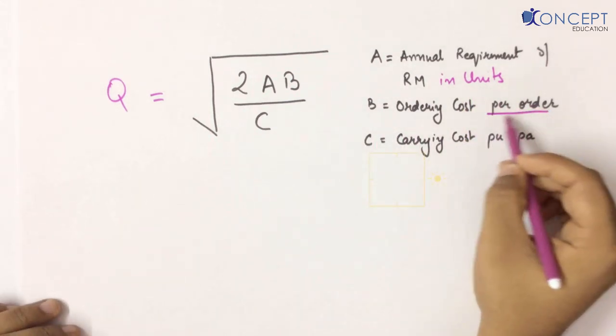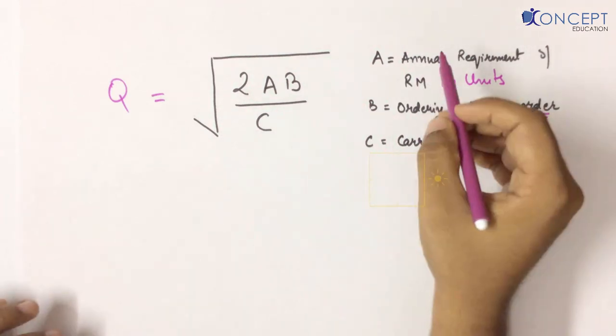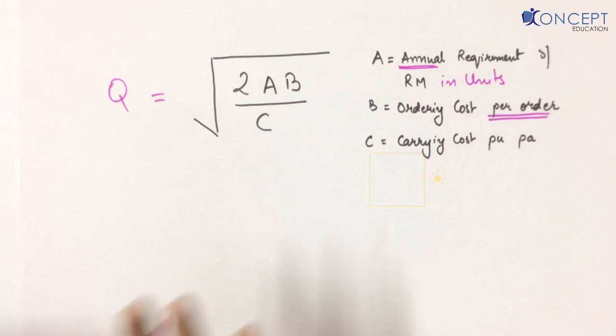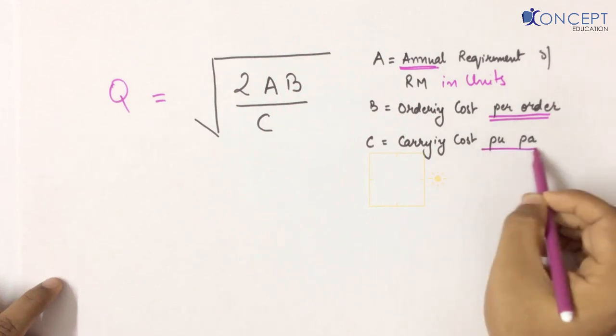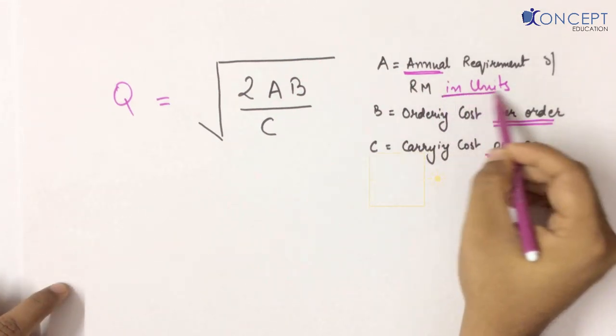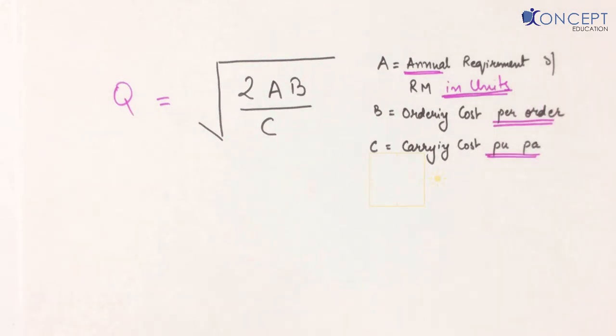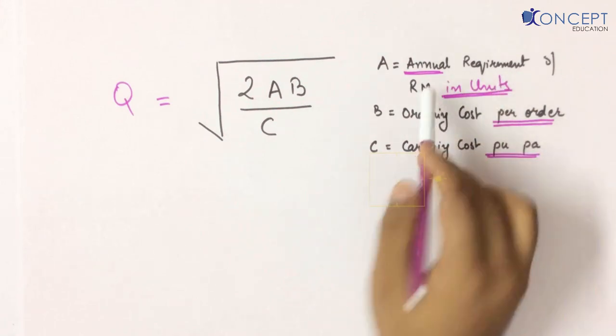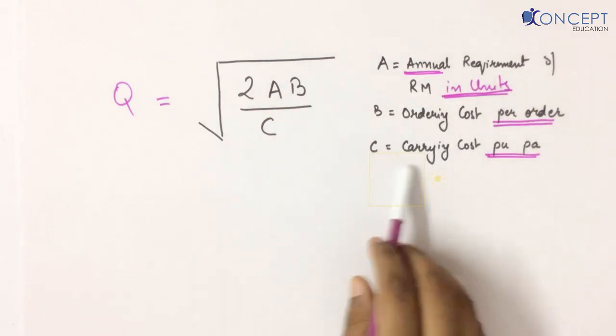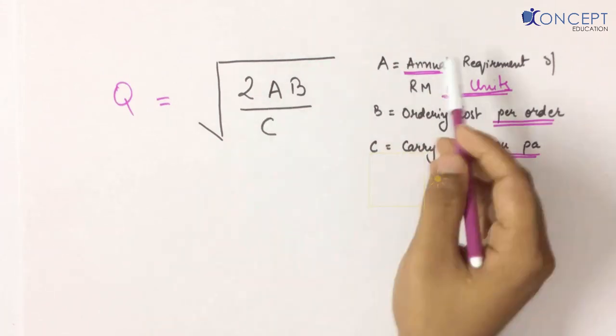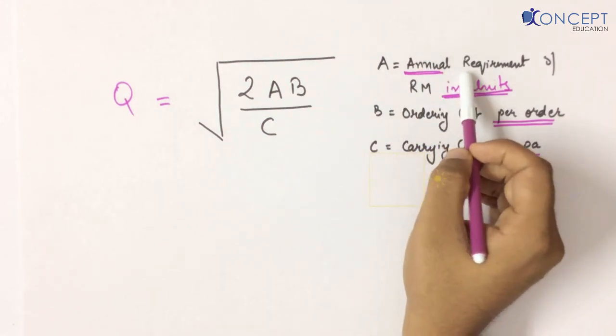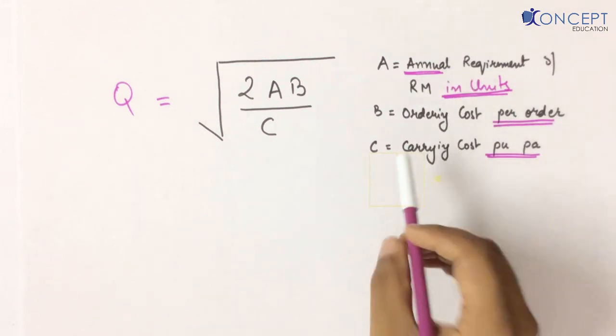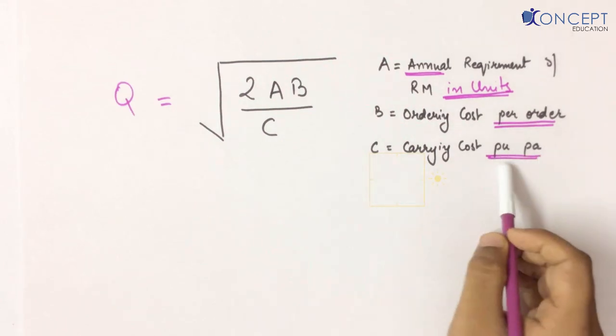B is ordering cost per order. And remember, it's annual requirement, not quarterly or monthly. A is annual requirement of raw material in units, B is ordering cost per order, and C is carrying cost per unit per annum. We need to make sure it's per unit per annum.